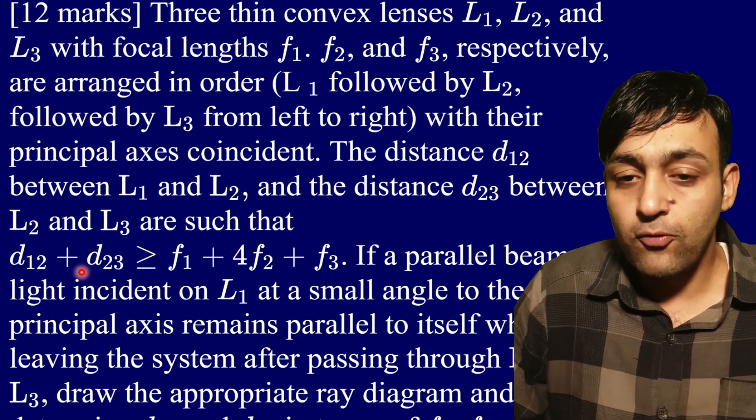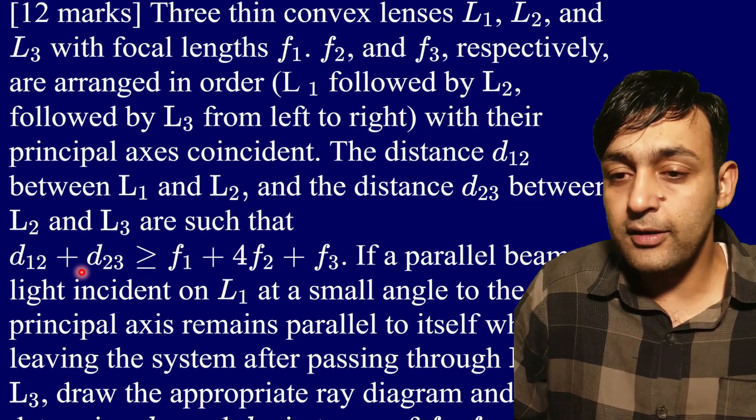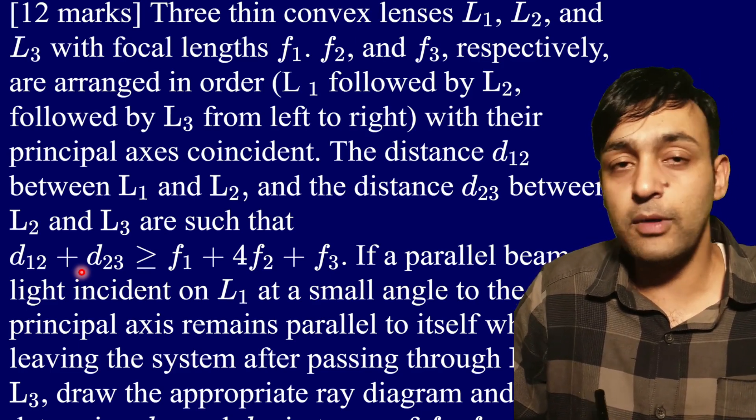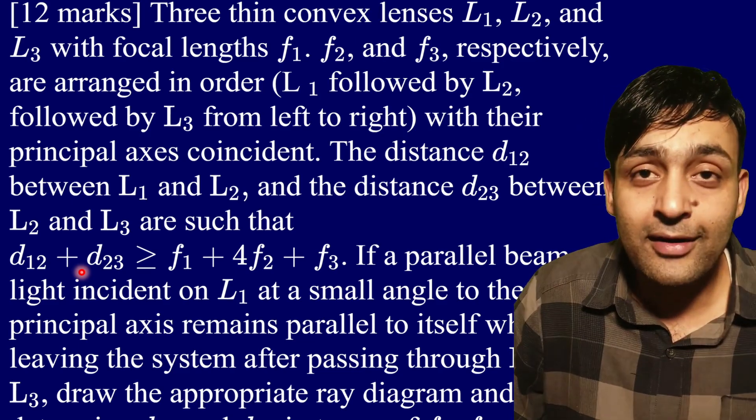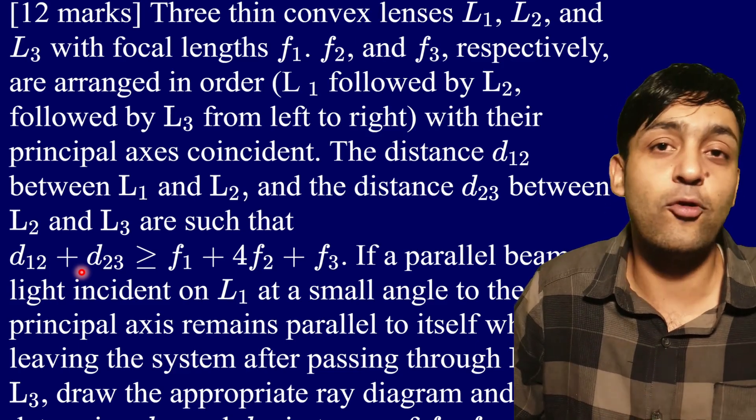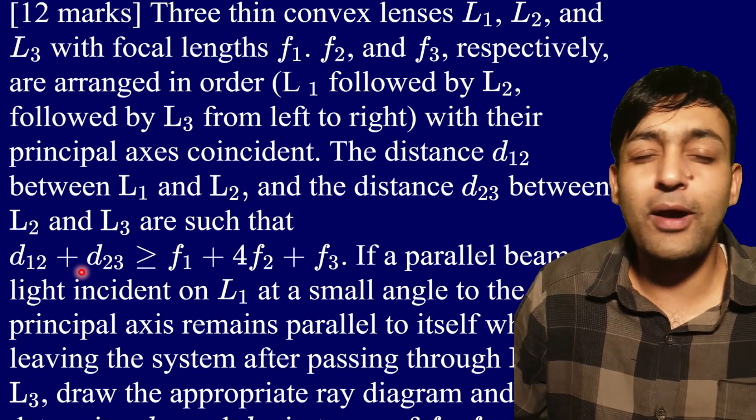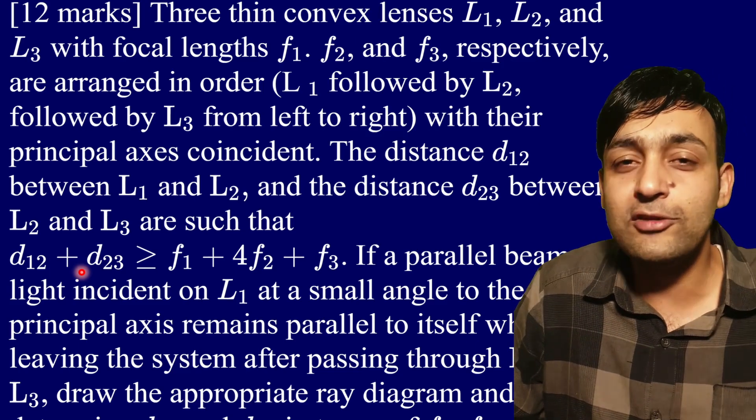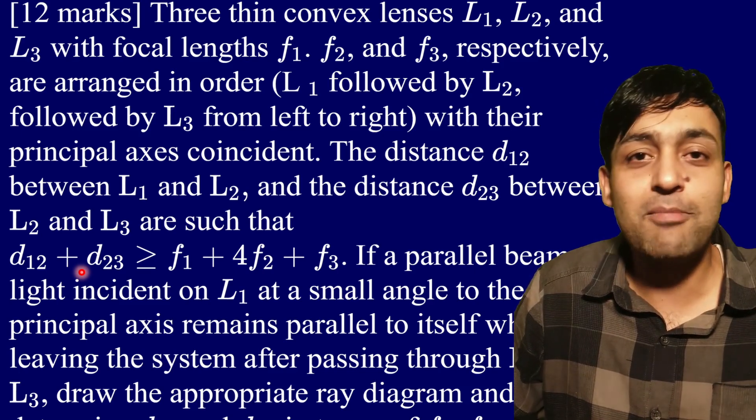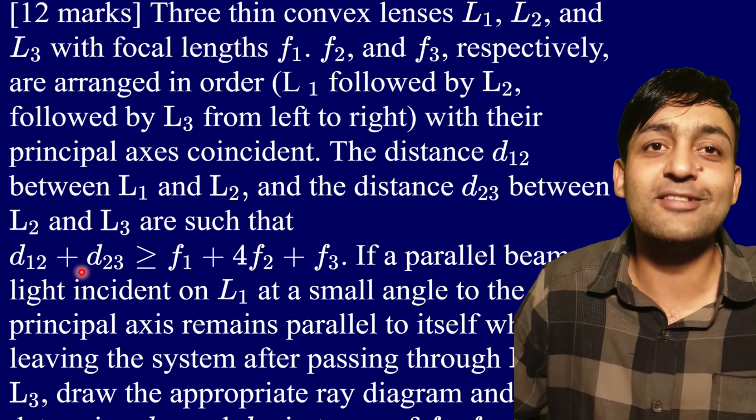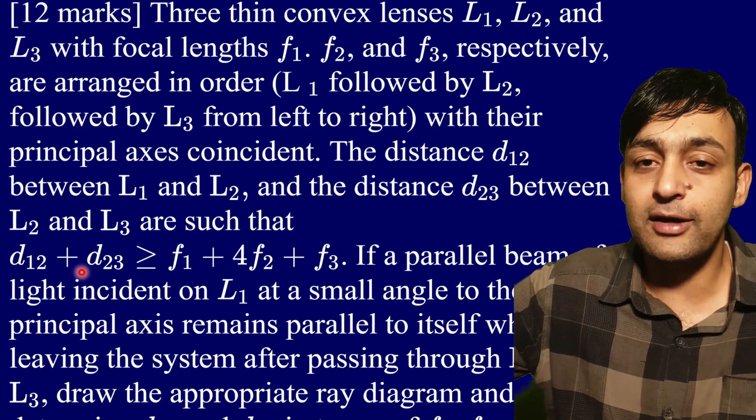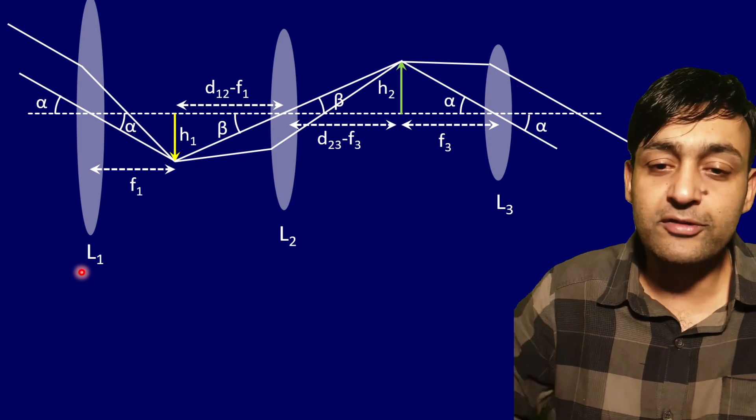What I overlooked in the first solution was this small angle part only. The reason it happened is because this question is based on the working of a telescope, and these things which are actually included in the JEE Mains level are sometimes my blind spot. I did not think it in that way, I did not consider that possibility.